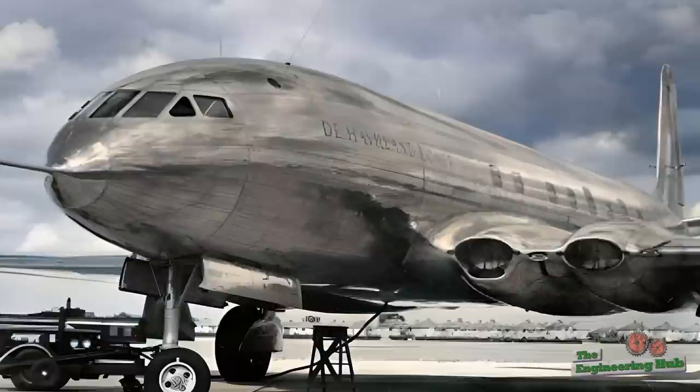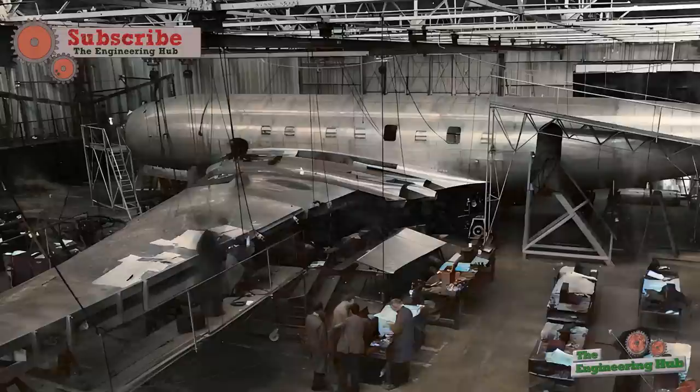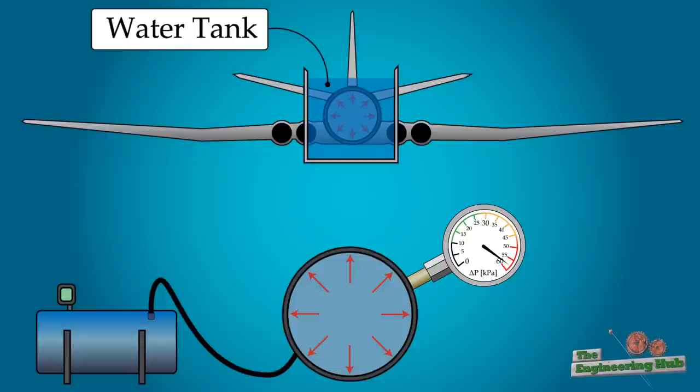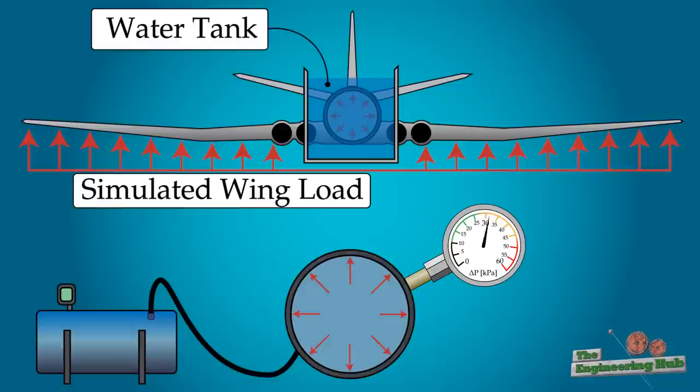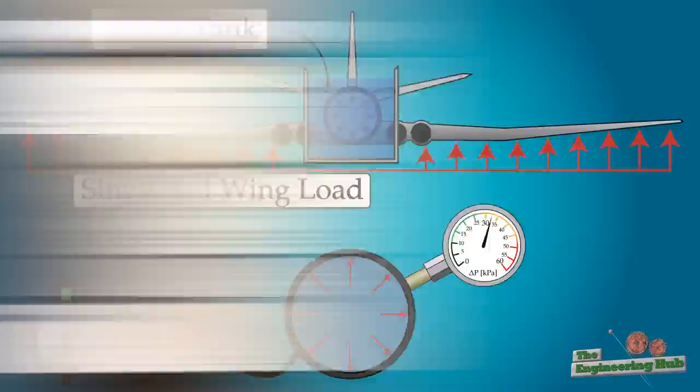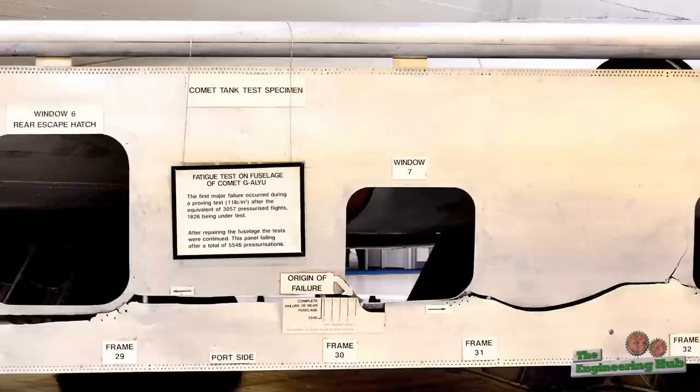With three failures on the line, a new fatigue test of a full plane was requested. The Comet Yoke-Uncle was taken from the fleet after flying 1,221 flights and was subjected to testing. The test was performed by pumping water in and out of the fuselage, with the entire fuselage submerged in water to offset the effects of the water weight. The wings were also loaded with hydraulic rams to simulate flying conditions. This accelerated testing showed severe weakness of the fuselage to fatigue crack growth around windows and escape hatches.